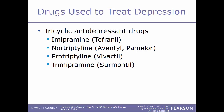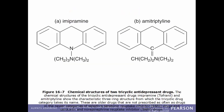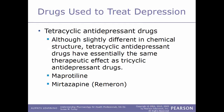In this image we have the chemical structures of two tricyclic antidepressant drugs — imipramine on the left and amitriptyline on the right — and in each one you can clearly see the three ring structures, which is why these are called tricyclic antidepressants.